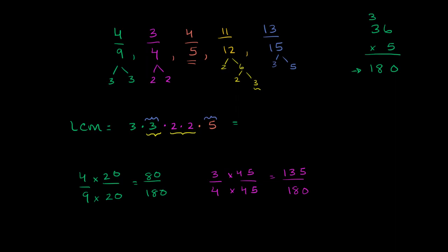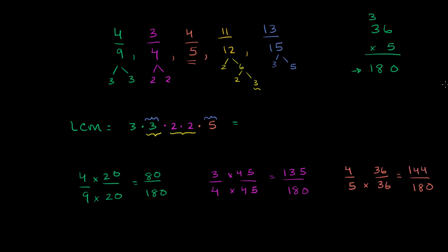Now let's do 4/5. To get the denominator to be 180, what do you multiply 5 by? We know from our work that you multiply it by 36. Then you multiply the numerator by 36 as well, giving us 180 in the denominator. The numerator: 4 times 30 is 120, and 4 times 6 is 24, so it's 144 over 180.